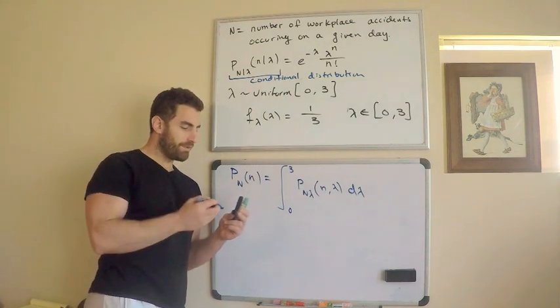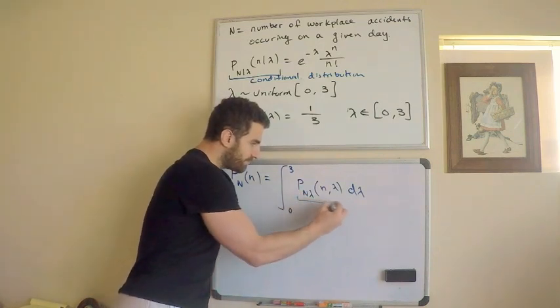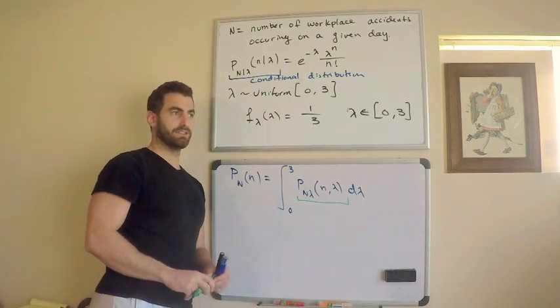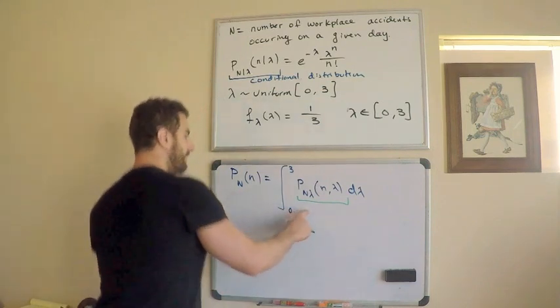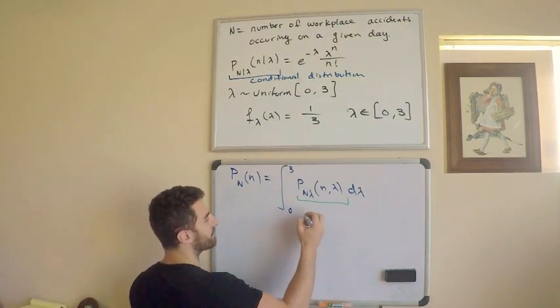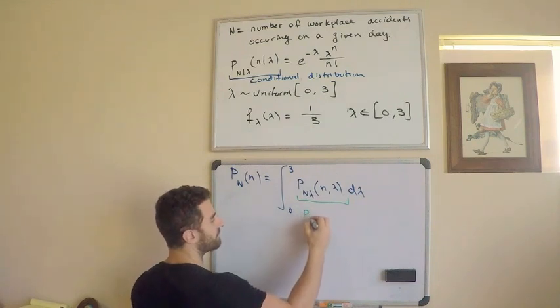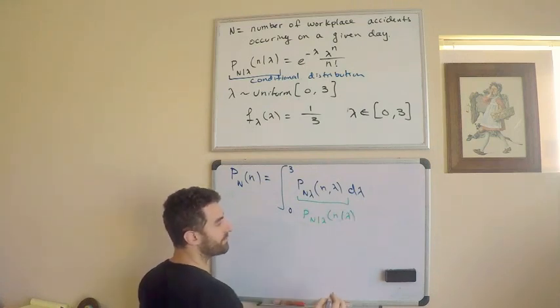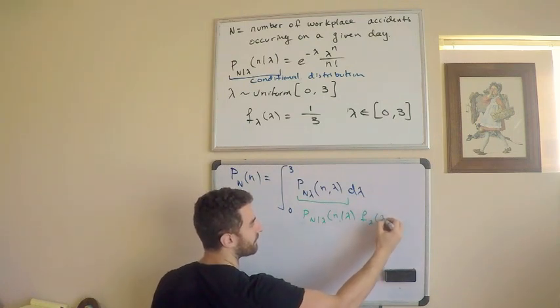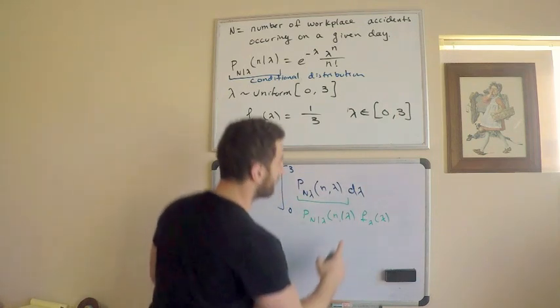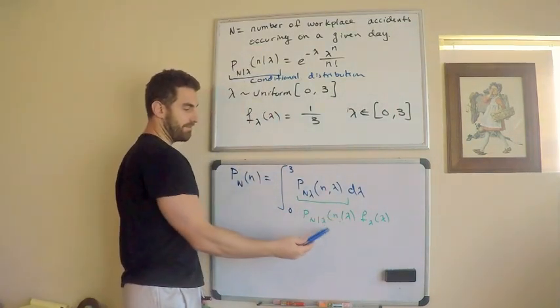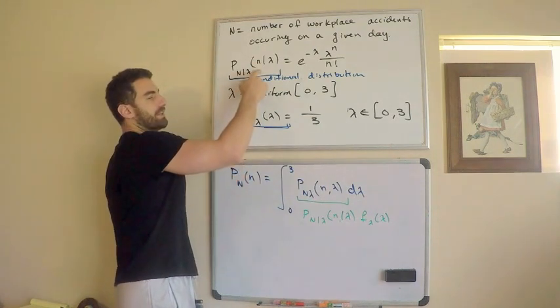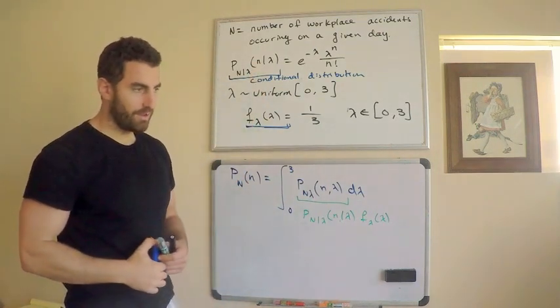Now, how does this even help me? Well, this helps me because I know something about this. This piece right here, what is this piece equal to? Use the definition of conditional distribution. So by definition, this right here is equal to the following, right? This is equal to the conditional distribution, okay, n given lambda, times f of lambda. So this is what's helpful. This is what's helpful right here is because I have both of these pieces. I have this and I have this. I have the marginal density of lambda and I also have the conditional mass function for number of workplace injuries.